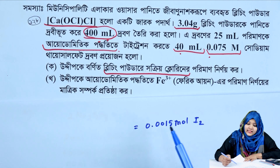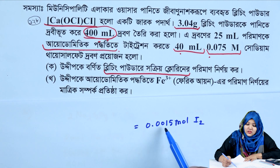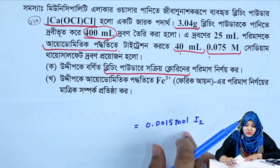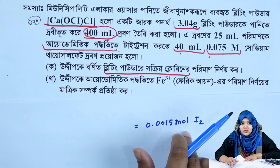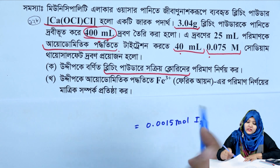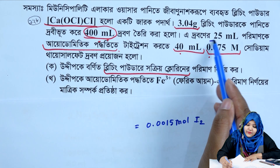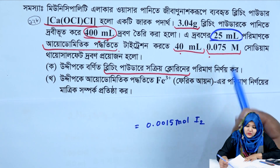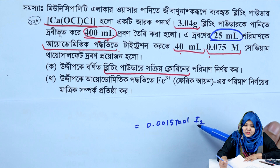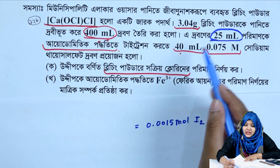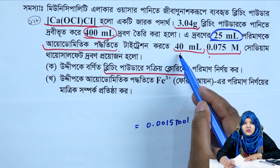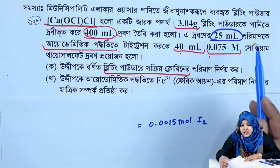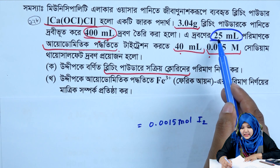This gives 0.0015 mol of iodine. In 25 milliliters we have 0.0015 mol, and in 40 milliliters we performed the titration. For 25 ml sample, the moles of iodine are 0.0015 mol.